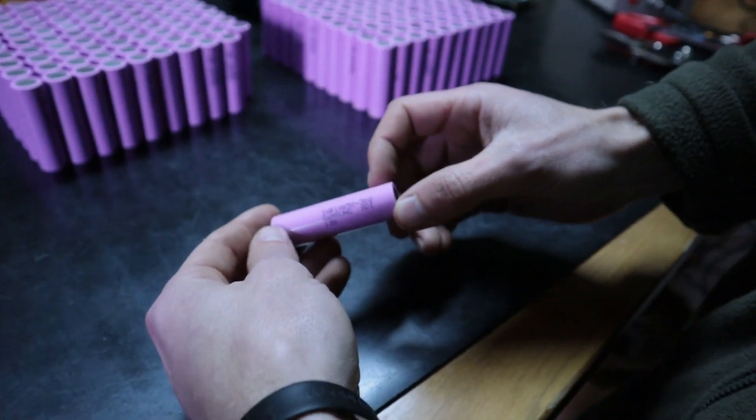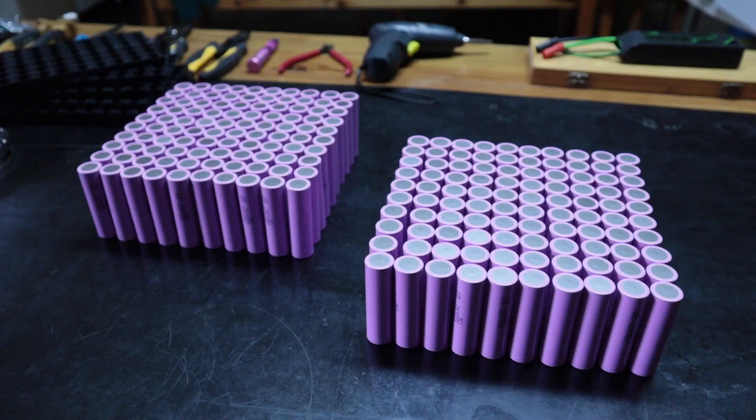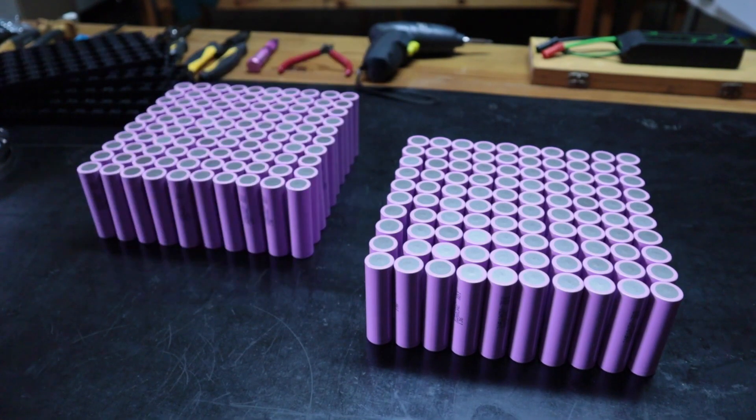We are starting with the Samsung 30q cells. We have a total of 200 cells on this pack. Each one is 3.7 volts, 3 amp hours capacity, and they can discharge up to 20 amps continuously.